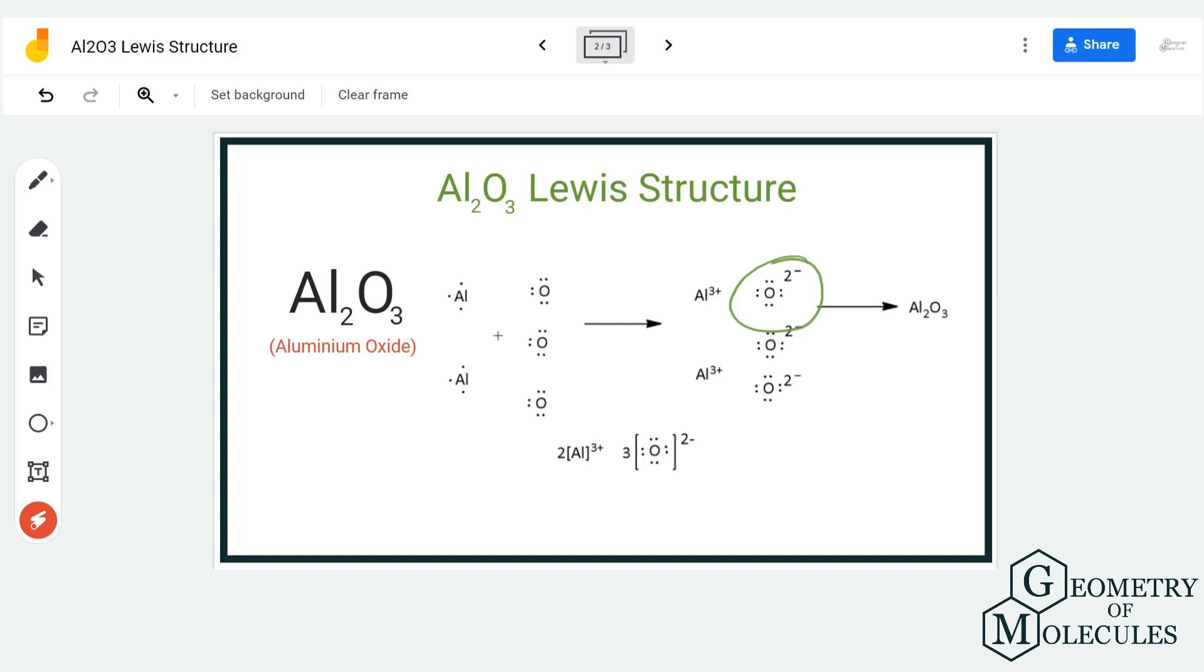So put a bracket over here, write the charge over here, and repeat the same for all the three atoms of oxygen. And now when you look at aluminum atom, it is giving away three electrons, so it will acquire positive charge. So write positive charge over here. So we have this.